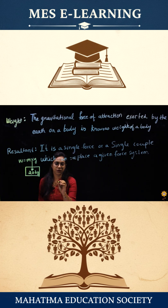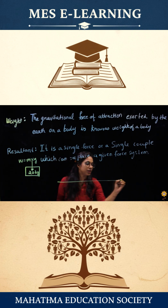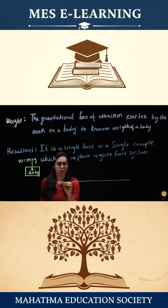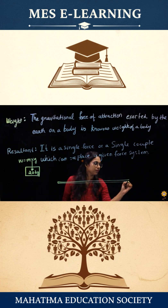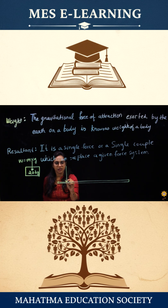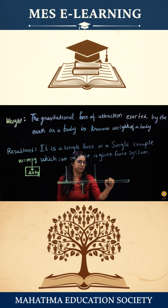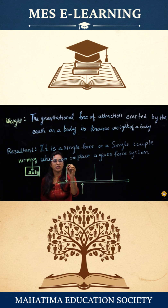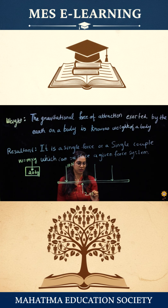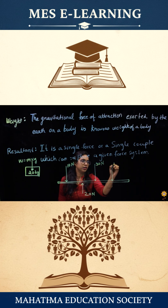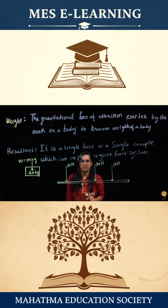Let's say I have a system wherein this is a rod or a beam where I have a few forces acting. Let's say this is 10 N, 20 N, 30 N, and 10 N. So this is the force system given.